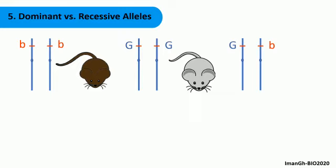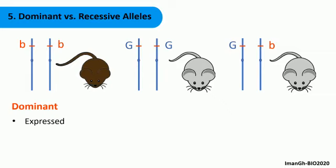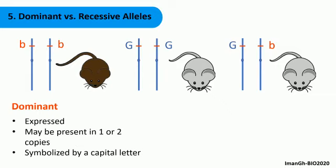But what will the phenotype be if the two alleles are different? In this case, the fur color will be gray. But why? This happens because the allele coding for gray is dominant. Thus, it contributes to the phenotype whether one or two copies are present in the genotype. As you have noticed, the dominant allele is shown with a capital letter.